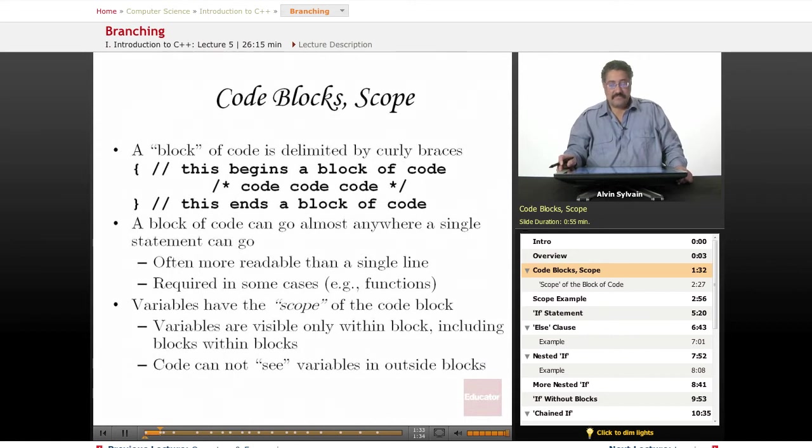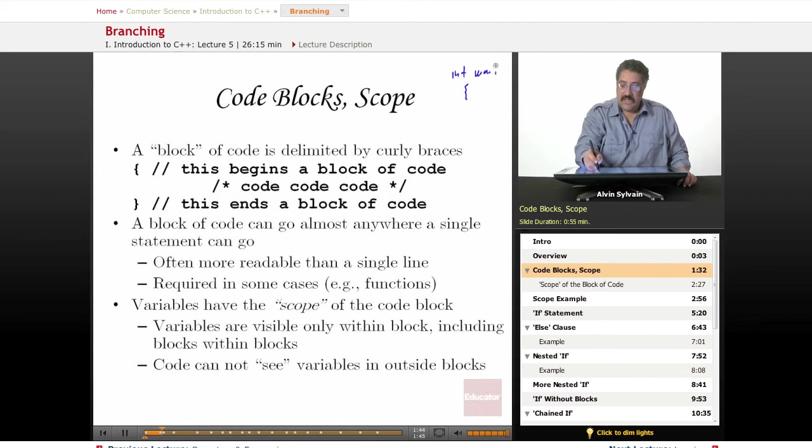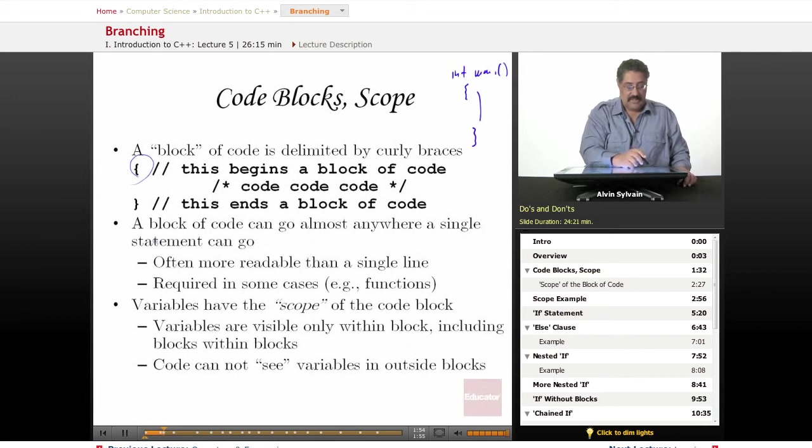All right, now code blocks. We've already seen one type of code block where you've got your main function where you put the entire program inside of a code block. Basically you have your open curly brace which begins a block of code and your end curly brace which ends a block of code.